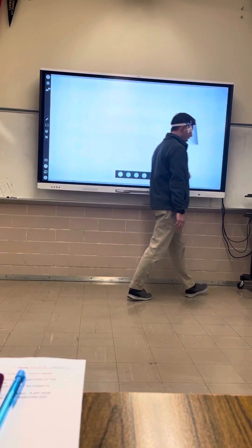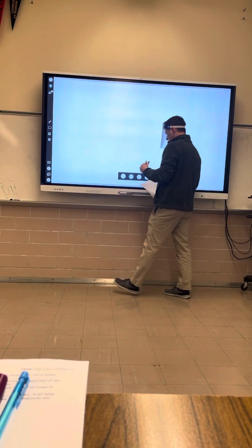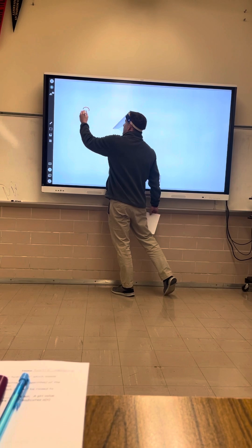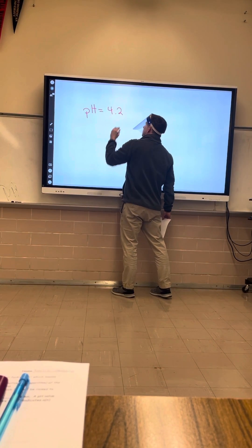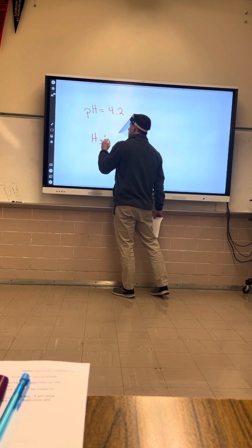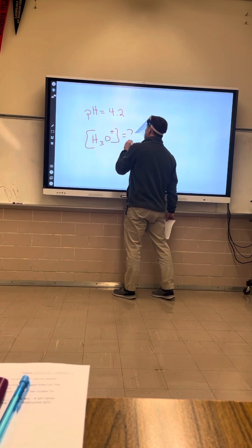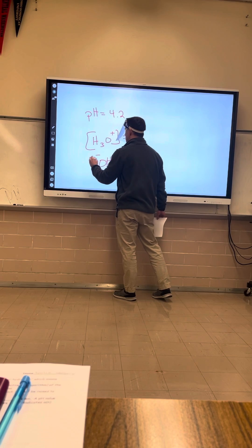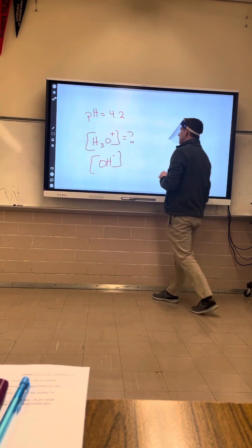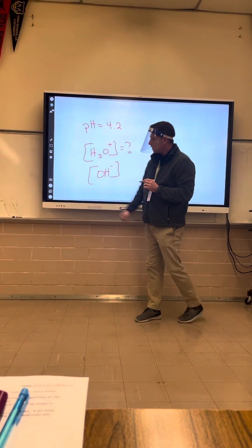Let's do another problem. Let's say the pH equals 4.2. Let's find the H3O+ and let's find the OH-. All right, so the first thing to do, we'll use the bottom formula over there.